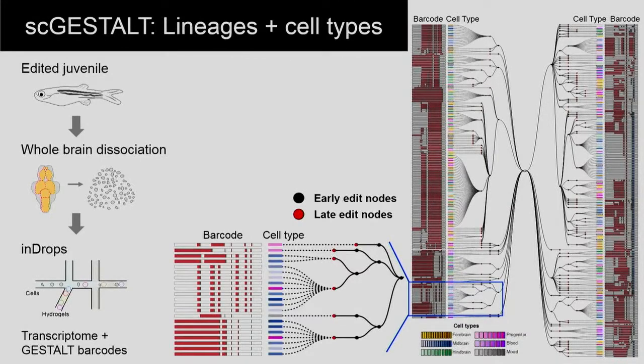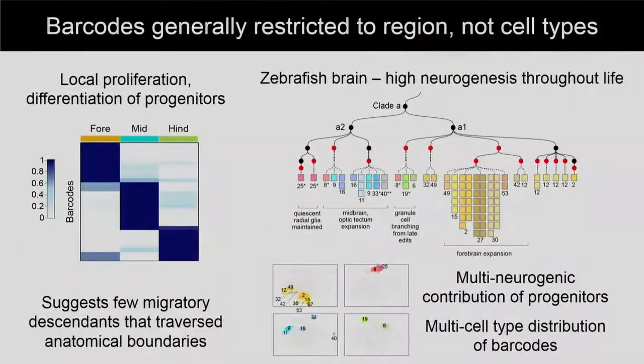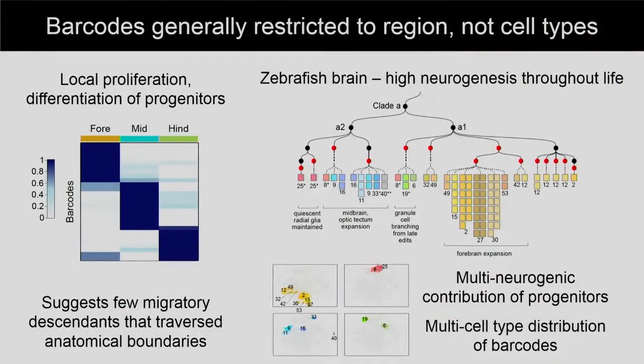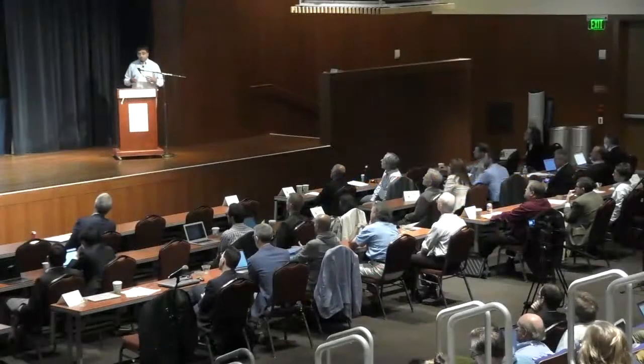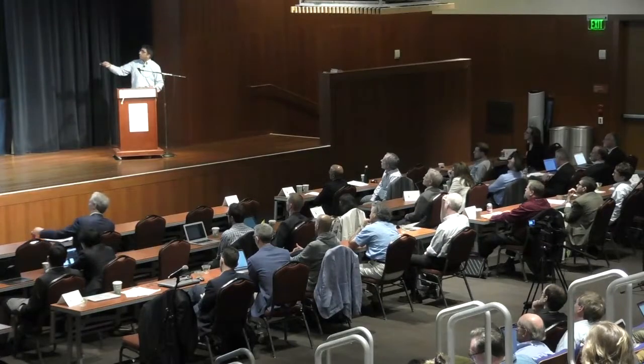One of the cool things about single-cell GESTALT-seq is that from the t-SNE plot you can see different clusters organized anatomically — cell types in the forebrain versus midbrain versus hindbrain. The barcodes tend to be anatomically restricted — either in the forebrain, midbrain, or hindbrain without much overlap — suggesting few migratory descendants traversing those anatomical boundaries. At the same time, you also see many cell types arising from a single progenitor, which makes sense given the huge progenitor population and ongoing neurogenesis in the juvenile zebrafish brain.